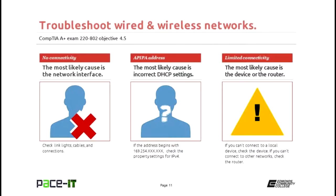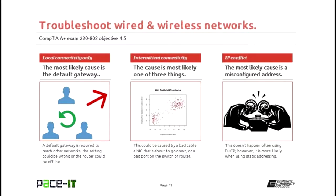Limited connectivity — you can't get out to the internet. The most likely cause is your device or the router. If you can't connect to a local device within the local network, check the device you're using. But if you can connect to other devices within your local network, you need to go check the router — it may be down, it may need to be rebooted, you may be plugged into the wrong port, or there may be a wrong setting. If you can connect to local devices, you're fine — time to check the router.